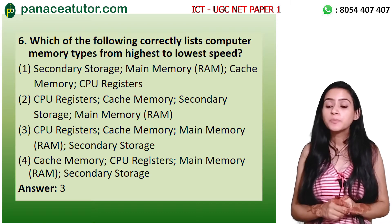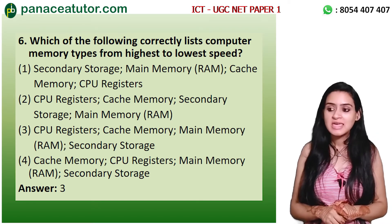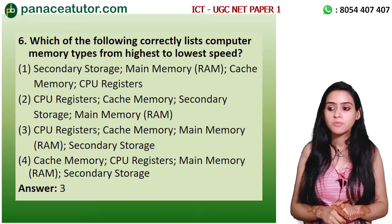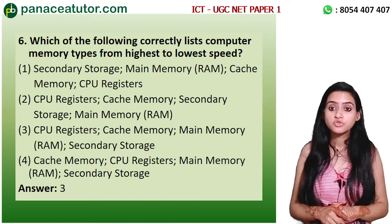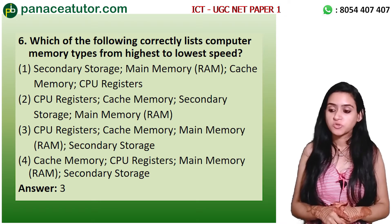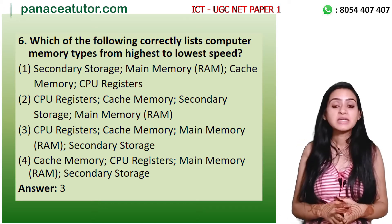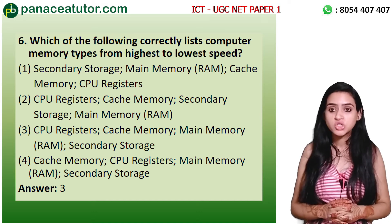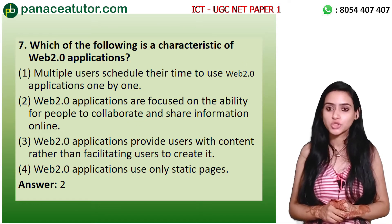The next question is related to memory order. Which of the following correctly lists computer memory types from highest to lowest speed? Option 3 gives: CPU registers, cache memory, main memory, and secondary storage. The correct answer is Option 3 — CPU registers, cache memory, main memory, and secondary storage, listed from highest to lowest speed.